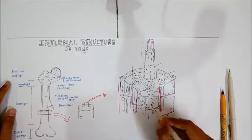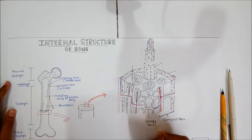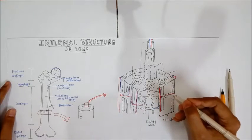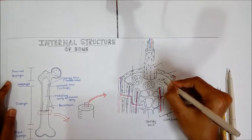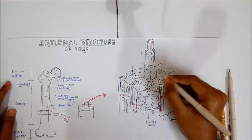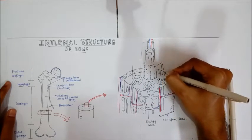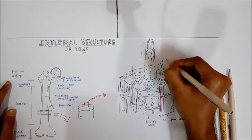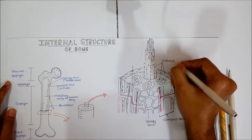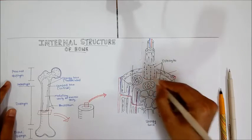The interior of the bone projects into a 3D latticework structure called the trabeculae, and this forms the spongy bone. You can also see spherical or oval cellular structures — these are the osteocytes.